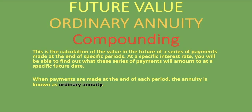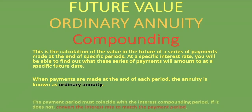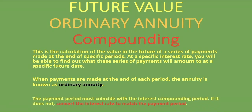But what do you do when your interest compounding is different from your payment compounding? The payment period must coincide with the interest compounding period. If it does not, convert the interest rate to match the payment period. For example, if payments are made at the end of each year but the interest rate is compounded monthly, you have to convert that interest rate to match the payment period — moving from compounded monthly to an annual rate, calculating the effective interest rate.